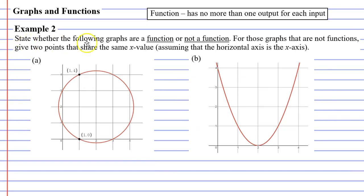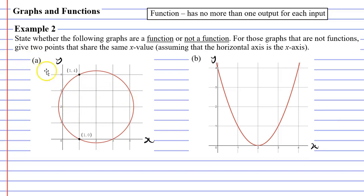We've been told to state whether this is a function or not a function. We know already that question A is not a function — we proved that earlier. For those graphs that are not functions, you need to give two points that share the same x value. So for question A, we can list the two points (1, 0) and (1, 4), because these are two points that share the same x value. These two points prove that it is not a function.